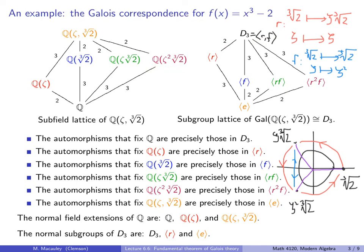Q adjoined zeta squared times the cube root of 2: this subfield is fixed by R²F. And finally, the automorphisms that fix the entire splitting field F — well there's nothing except the trivial automorphism, the identity. So that's precisely the corresponding subgroup at the bottom. Not only do these lattices look the same, but the correspondence tells us precisely what automorphisms fix which subfields.